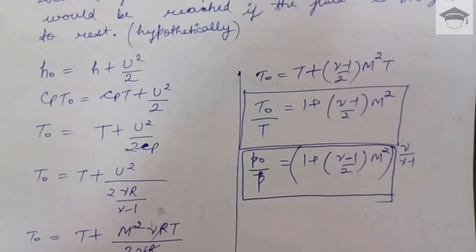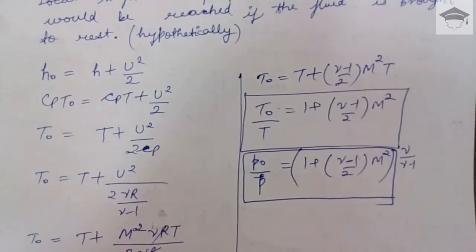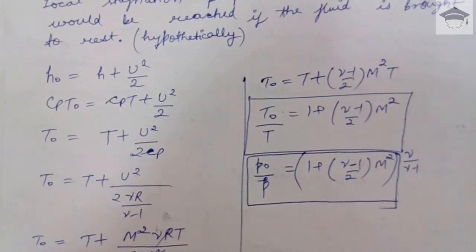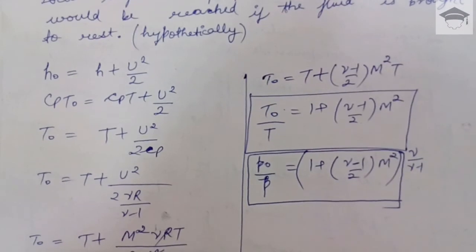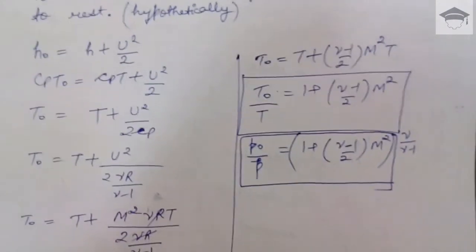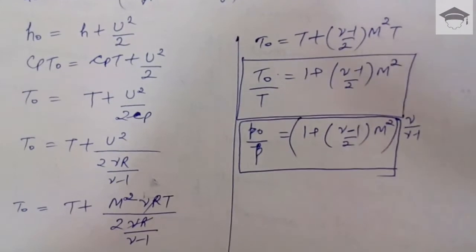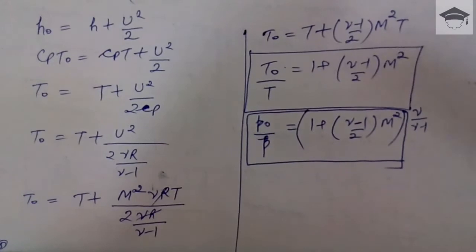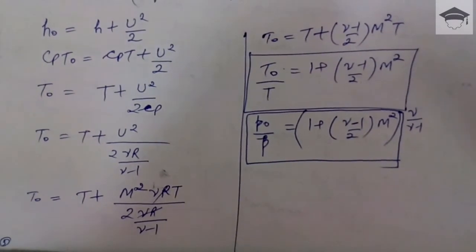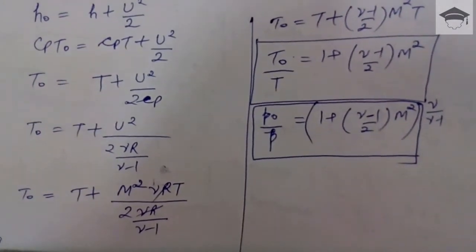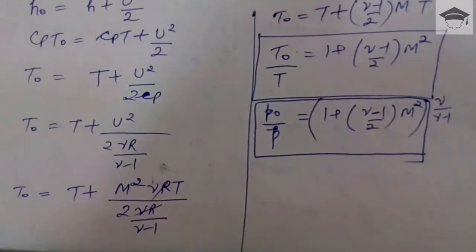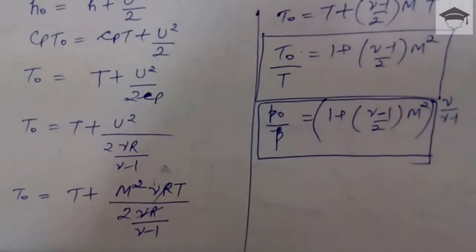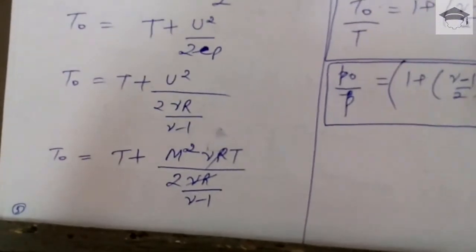Now u = M·c = M·√(γRT), so u² = M²·γRT. Substituting into the temperature equation with Cp = γR/(γ−1), the γRT terms cancel, leaving T₀ = T + (γ−1)/2 · M²·T. Factoring out T gives T₀/T = 1 + (γ−1)/2 · M².